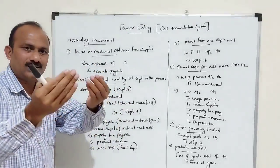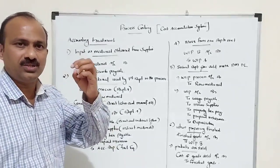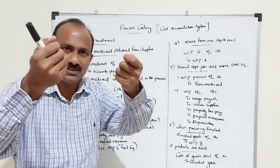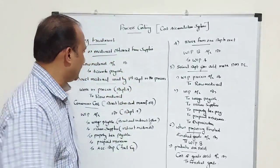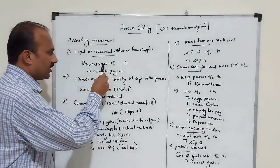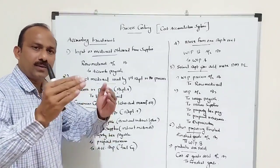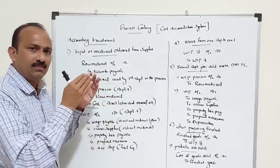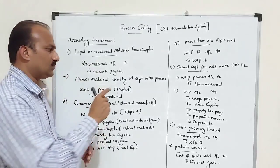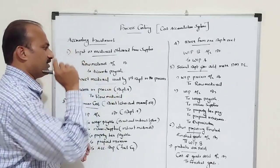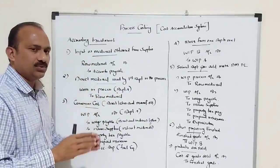Firstly, you are purchasing raw material from suppliers. The journal entry is: Raw Material Account debit, Accounts Payable credit — raw material came to the business purchased on credit, that is why accounts payable is used. Second, materials are used in the first department.